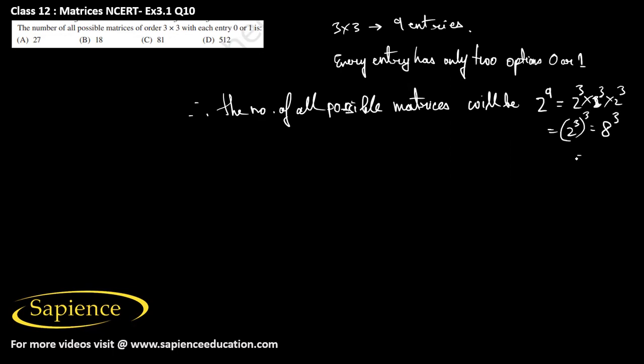That will be equal to 8 cube. So 8 cube is 64 into 8, that is 512. So 512 possible matrices can be made which have only 2 possible entries, 0 or 1. Therefore option D is the correct answer.